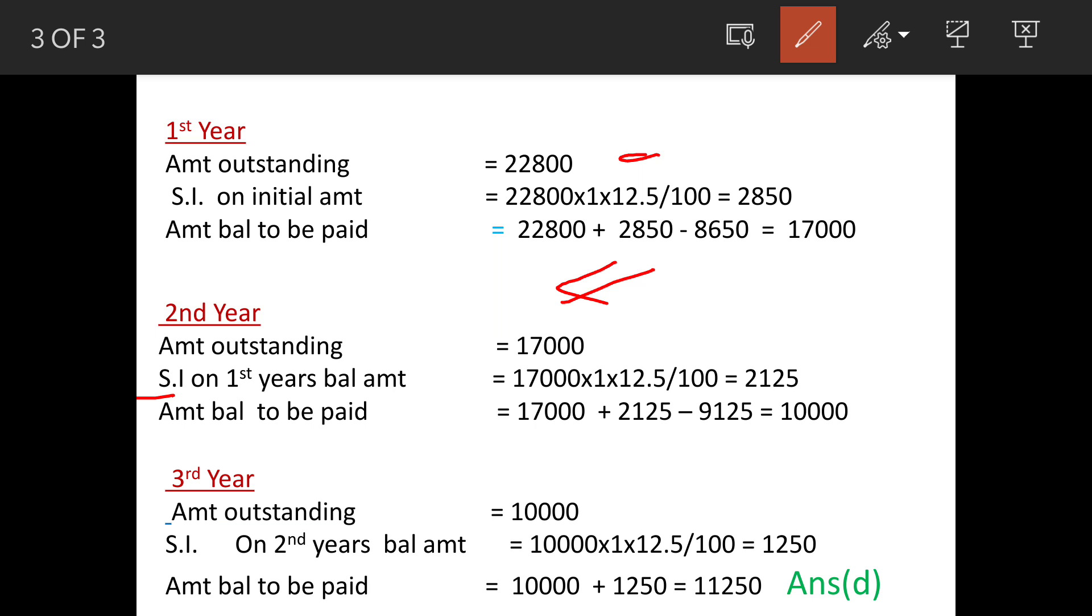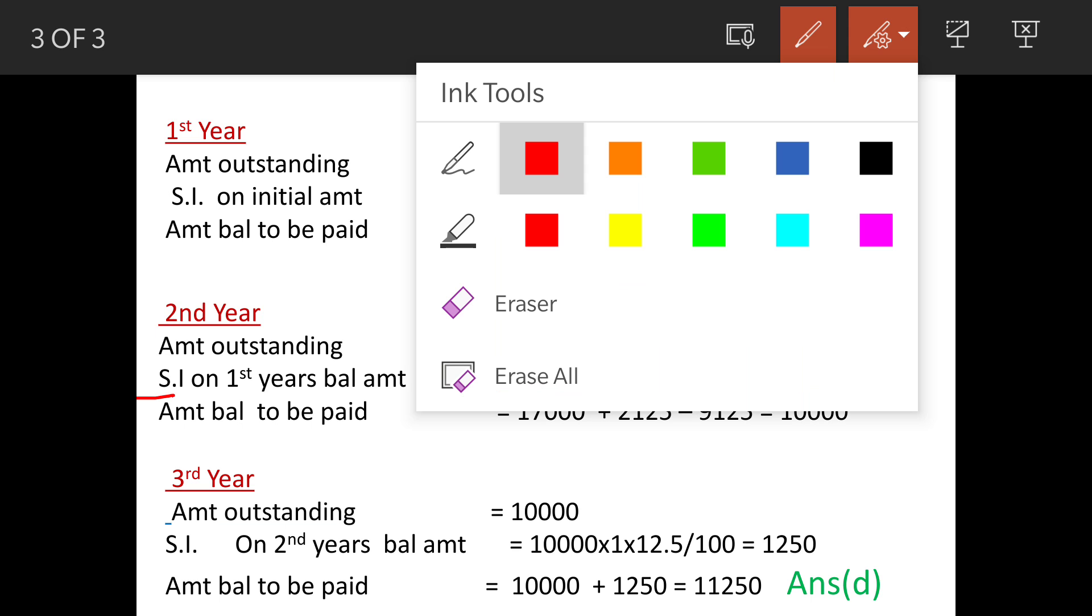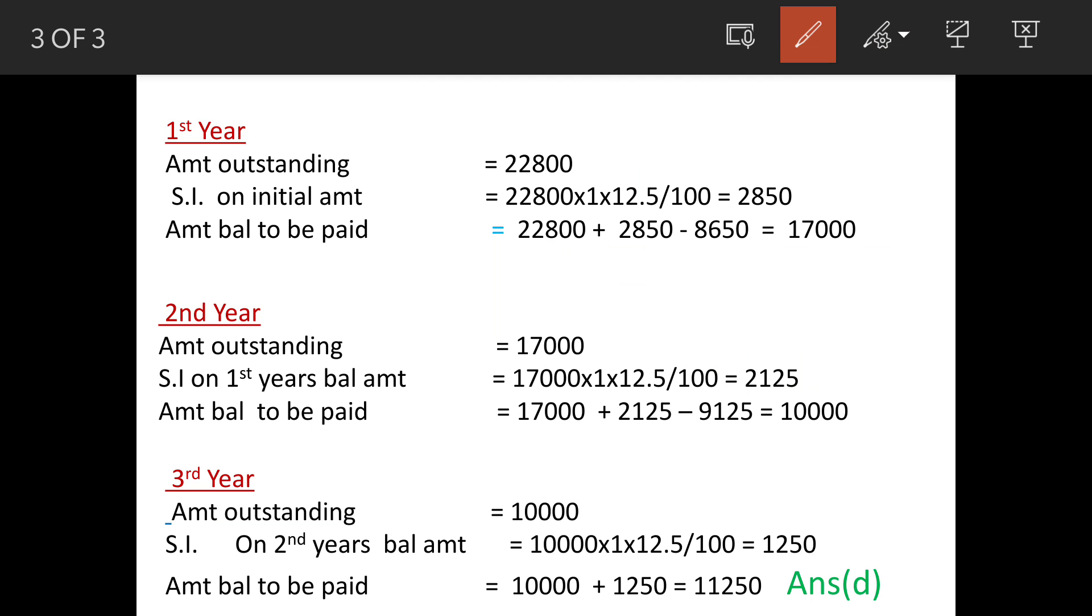it becomes automatically compounded. So the amount is 17,000 rupees, period is again one year, and the rate is 12.5 percent. So total interest is 2,125. The amount balance at the end of second year will be 17,000 plus 2,125 minus amount paid 9,125.